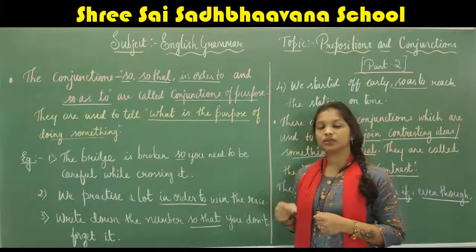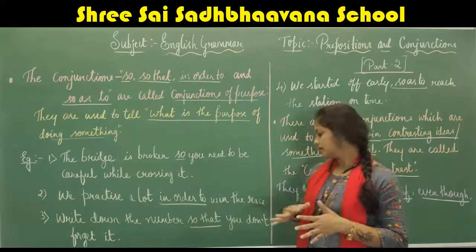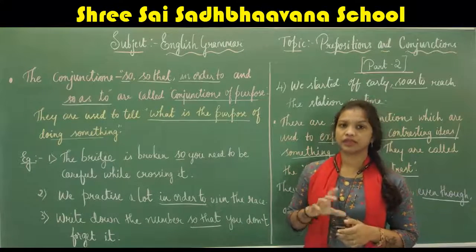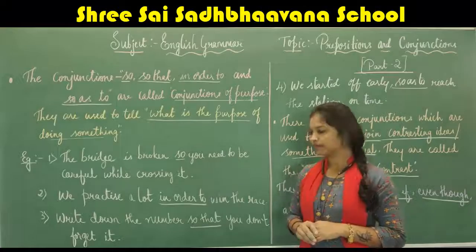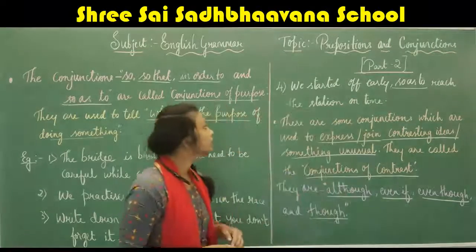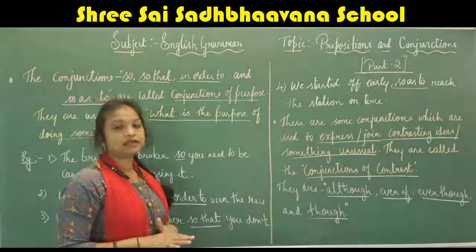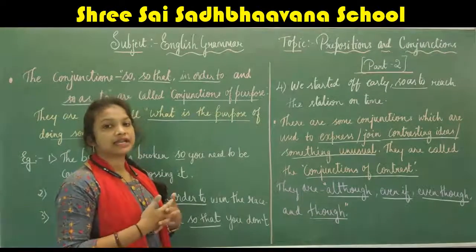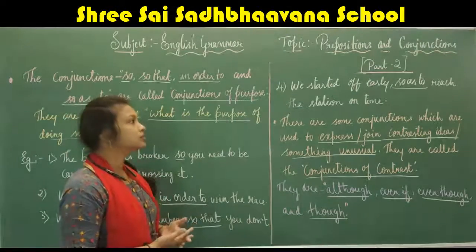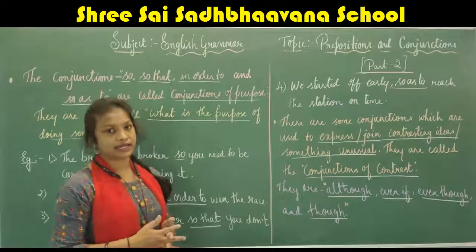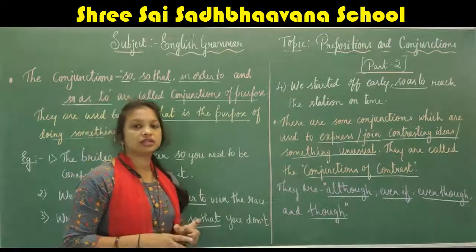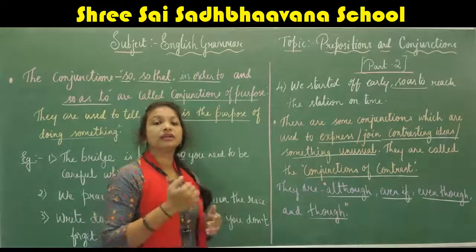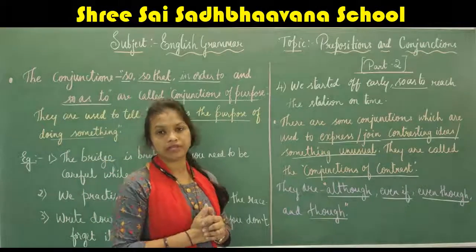Why do we need to write down the number? So that we should not forget it. Next: 'We started off early so as to reach the station on time.' Here the conjunction 'so as to' is also telling us about the purpose of doing something.